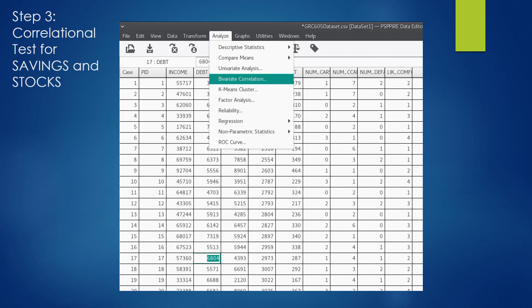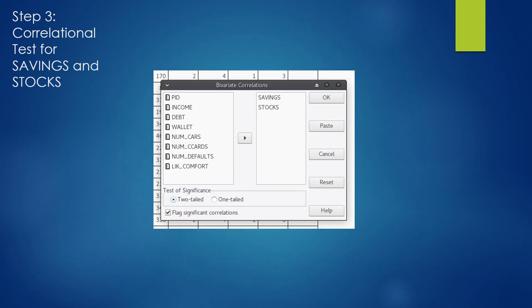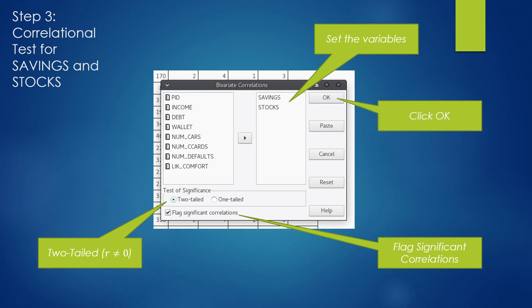To begin with the test in PSPP, click on Analyze and Bivariate Correlation. After clicking on Bivariate Correlations, you will see this dialog box. The first thing you want to do is to move the variables of interest over to the right-hand column. Afterwards, choose a two-tailed test and flag significant correlations. We'll talk a little more about this on the next slide. Once you've done all that, click OK.